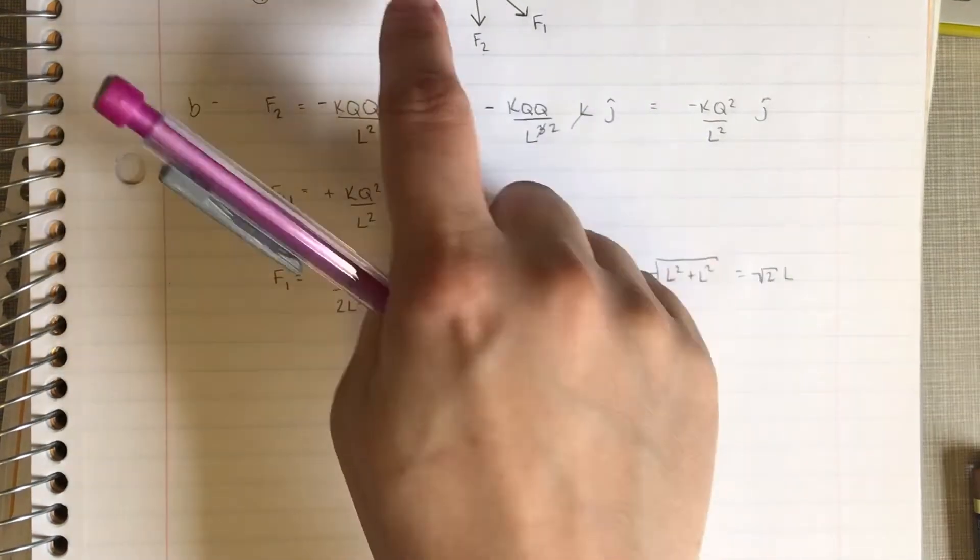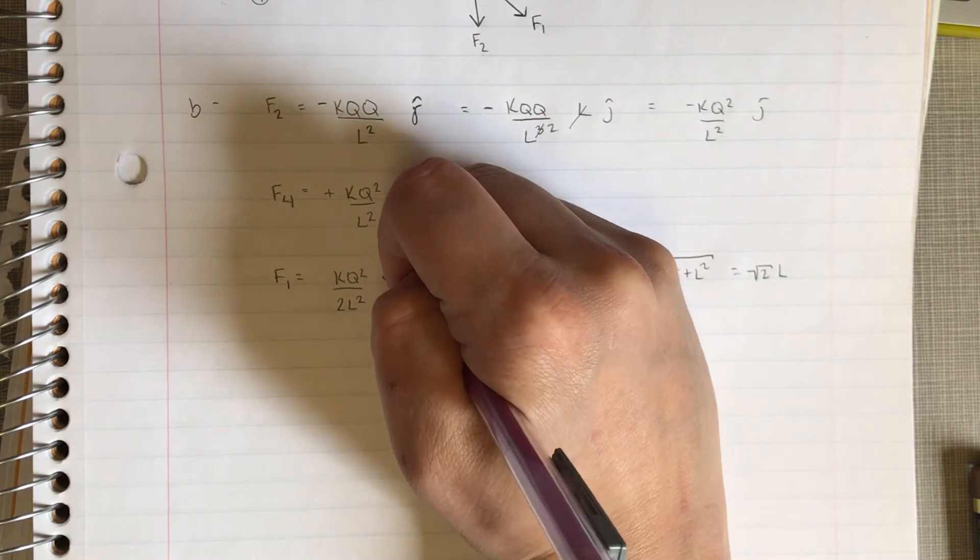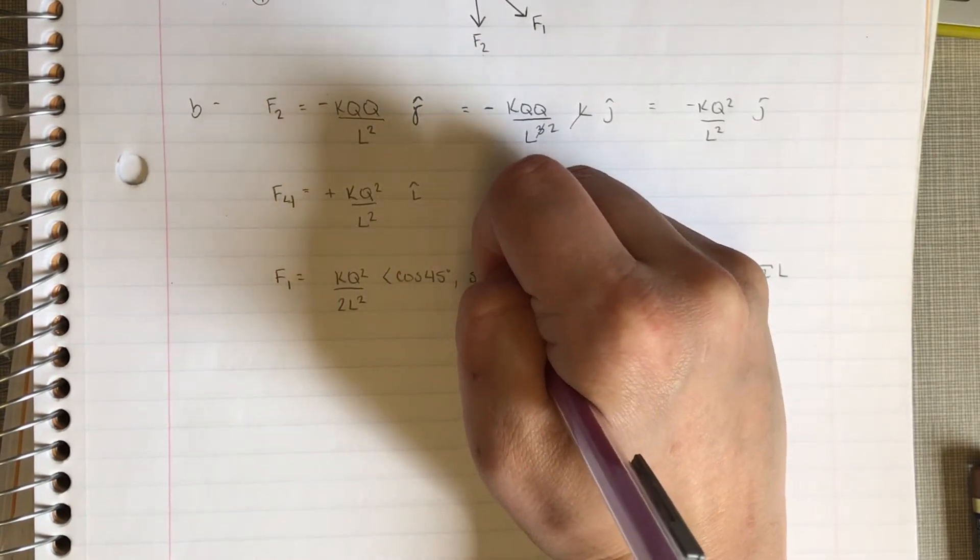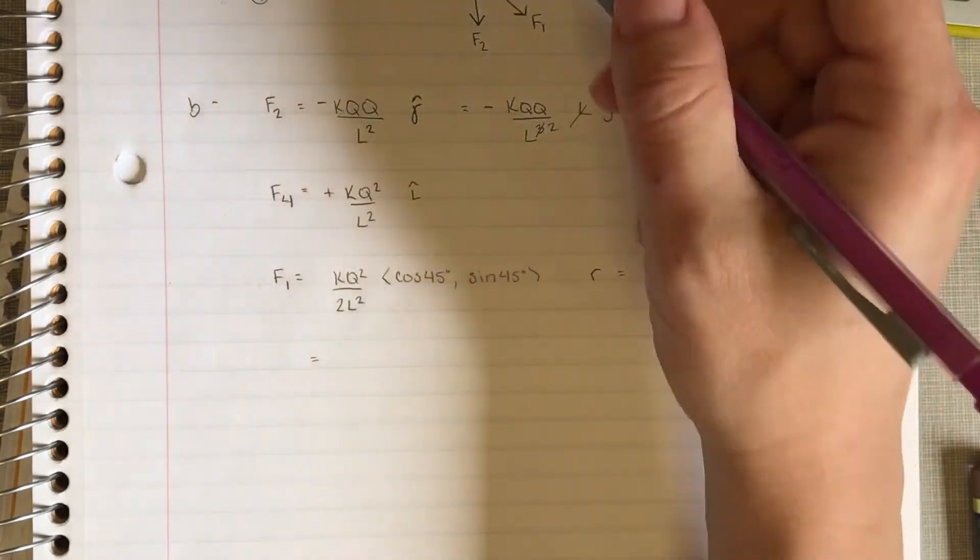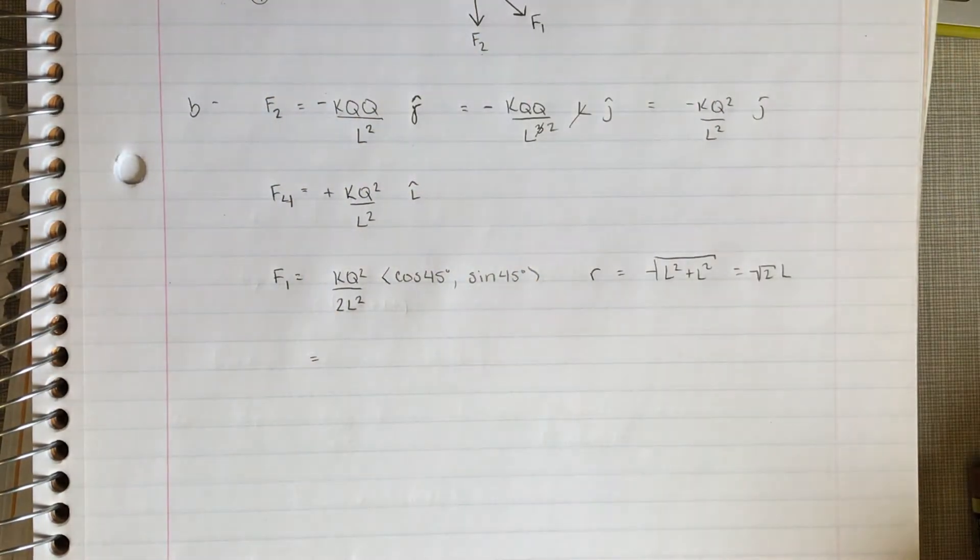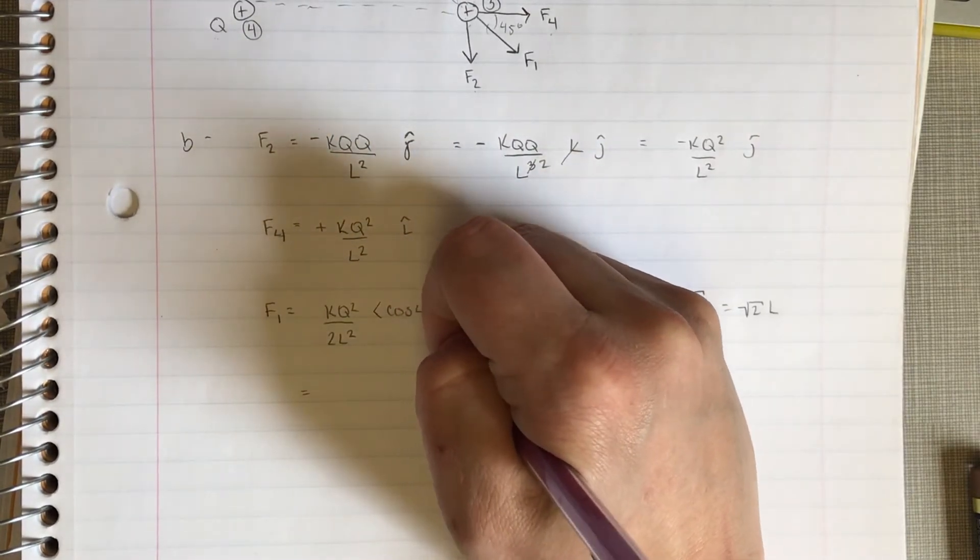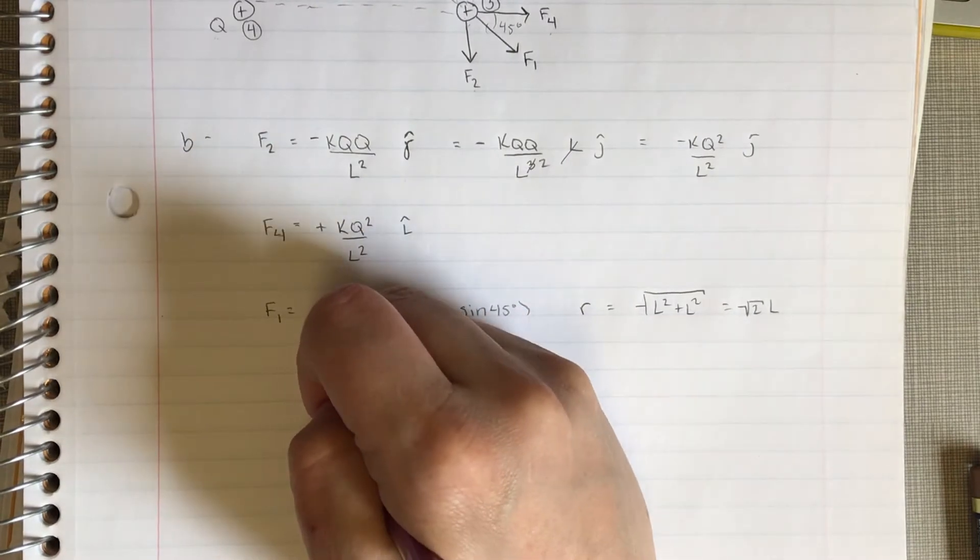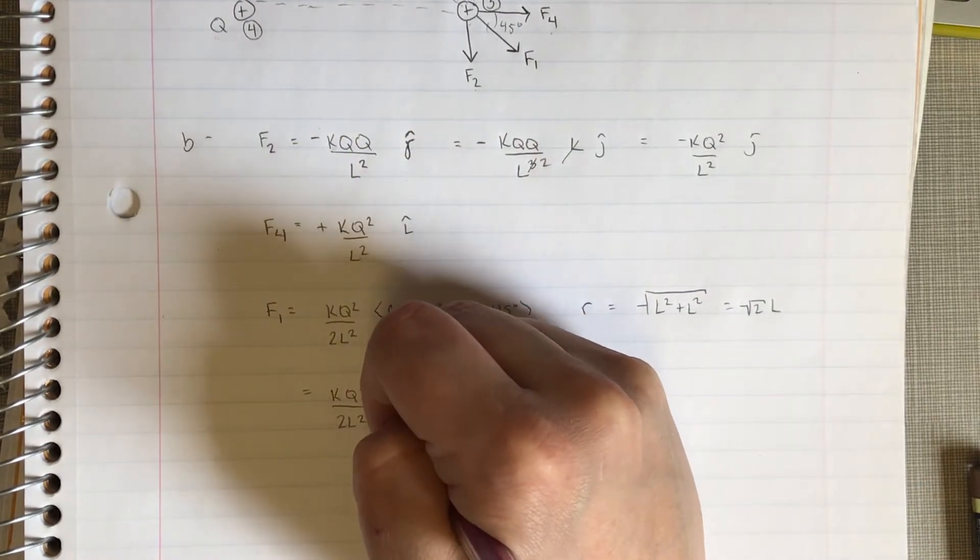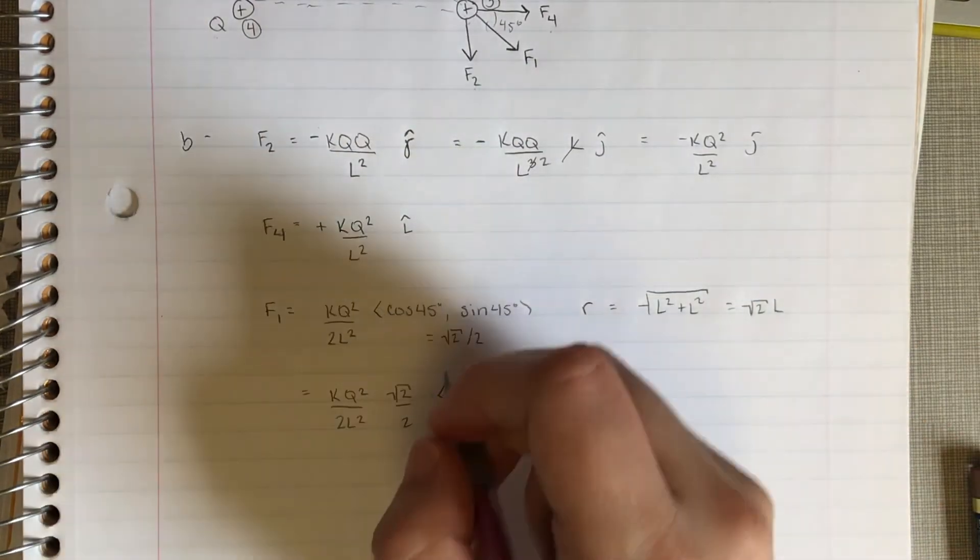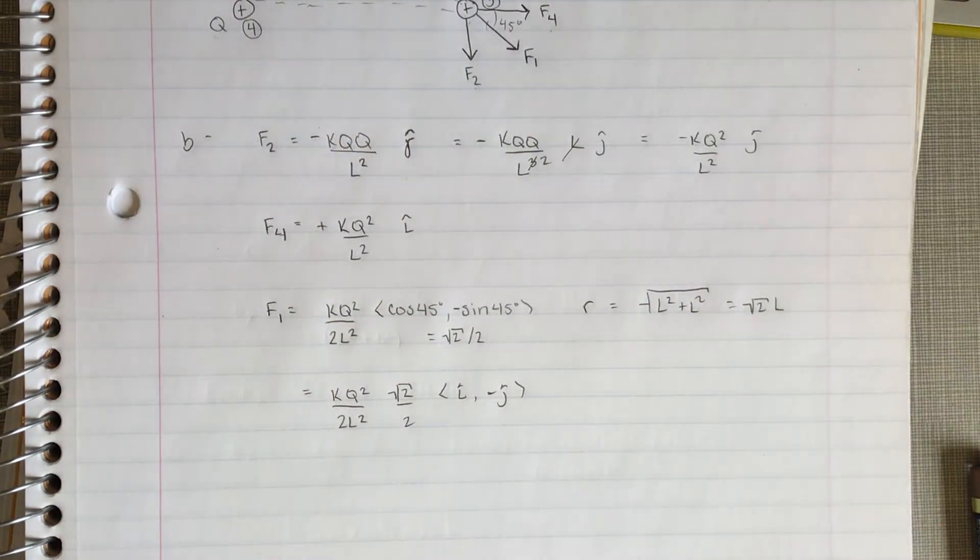That's going to be the magnitude of it, but then our r hat is going to pop us in a cos 45, sine 45, because this is a square, these angles here are 45 degrees. Cosine and sine of 45 is root 2 over 2. So the magnitude of this force is going to be k q squared over 2 L squared times root 2 over 2, and this is going to be our little i hat j hat. Well that's a minus because it's pointing down.